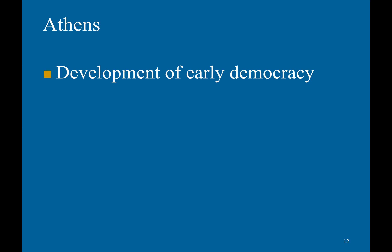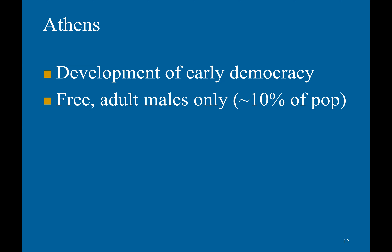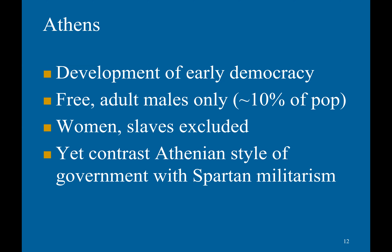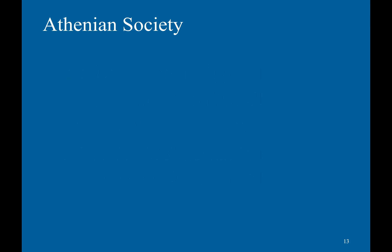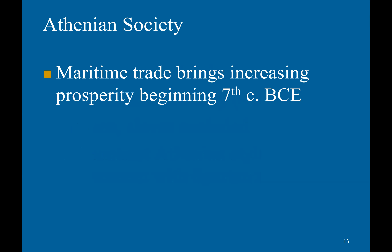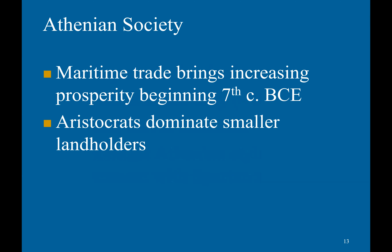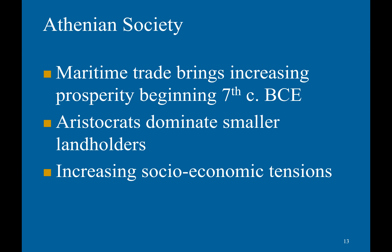Athens had experience with the development of early democracy. However, only free adult males could vote — about 10% of the population. Women and slaves were excluded. But it was still a considerably different style of government compared to Spartan militarism — think of the Soviet Union versus the United States as an analogy. Maritime trade brought increasing prosperity beginning around the 7th century BCE, but aristocrats dominated smaller landowners, leading to increasing socioeconomic tensions and class conflict.